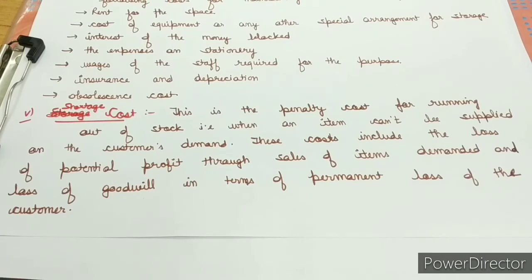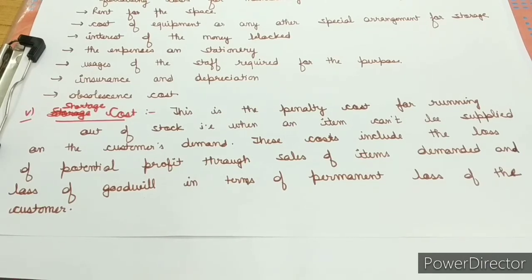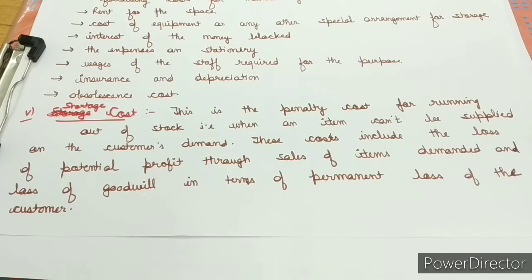Shortage cost is the penalty cost for running out of stock when an item cannot be supplied on the customer's demand. These costs include the loss of potential profit through sales of the item demanded and loss of goodwill in terms of permanent loss of the customer. If a customer comes to our shop and the product they demanded is not available due to shortage, they may go to another shop next time where everything is available — so shortage cost reduces profits and can cause permanent loss of customers.